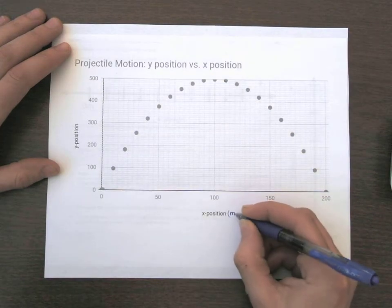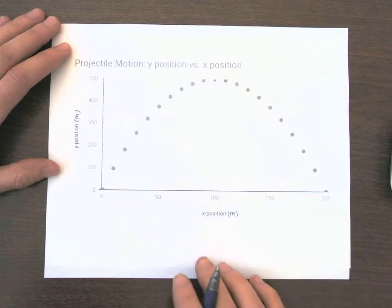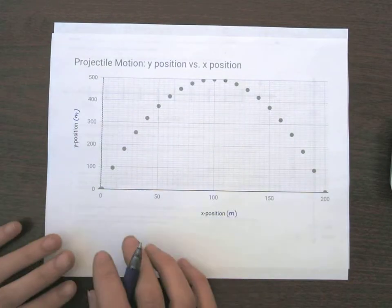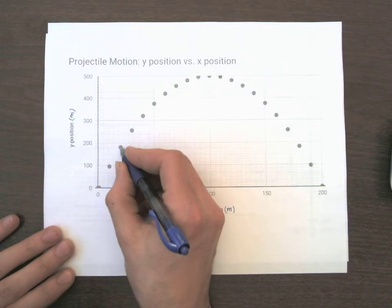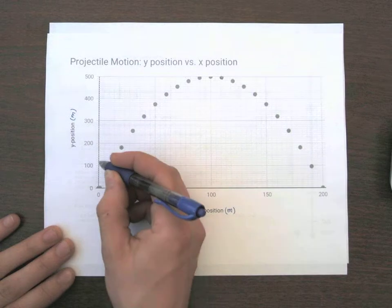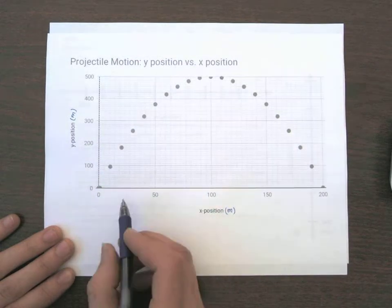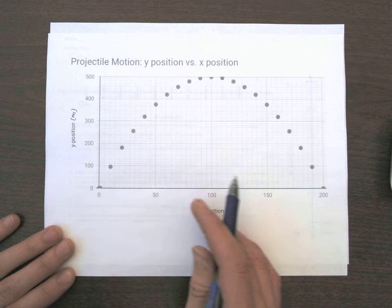I'm going to give some units here. I didn't do that, I apologize. So when you look at a point on this graph, it's going to tell you what its Y position is, so how high it is up from the original starting point in the Y. And that's also going to give you an X position, how far has it moved in the horizontal.